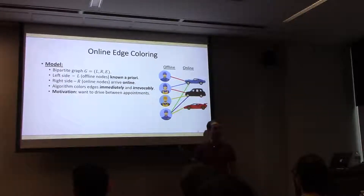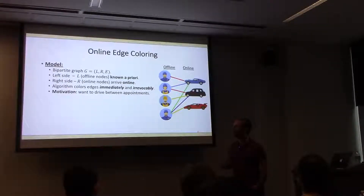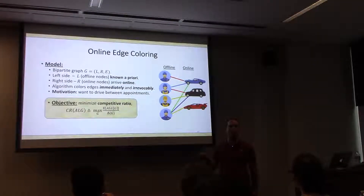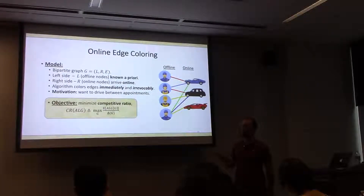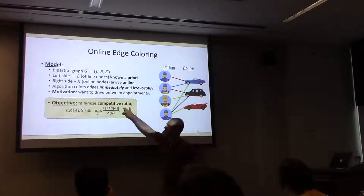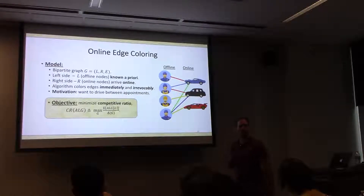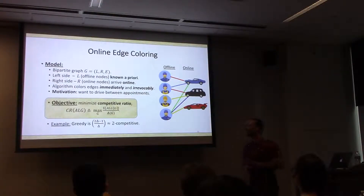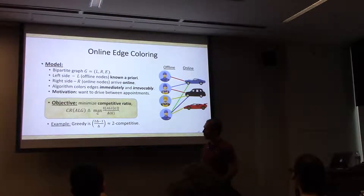We're trying to minimize the palette size compared to the optimal delta colors, since this is a bipartite graph. As usual for online algorithms, the quality of our solution is measured via a competitive ratio — the worst case over all possible graphs of the number of colors used by the algorithm over the optimal number of colors. The competitive ratio of the greedy algorithm is roughly two. We'll start by assuming we know delta, then talk about not knowing it.